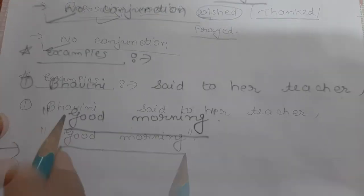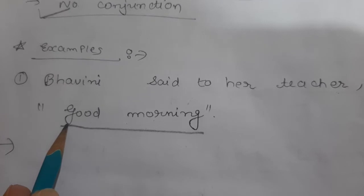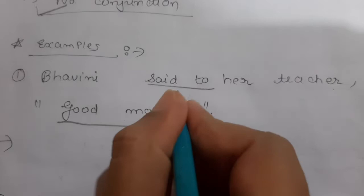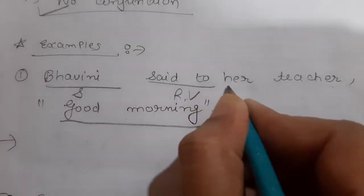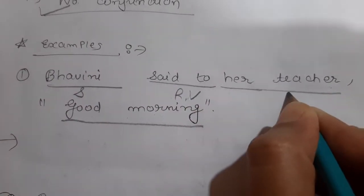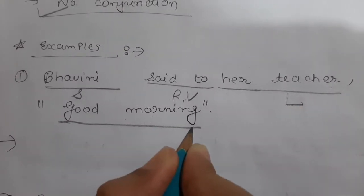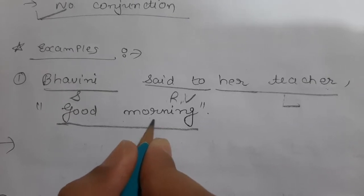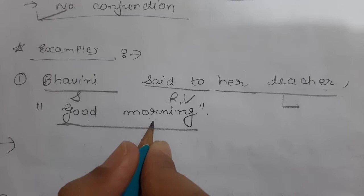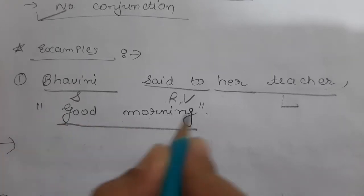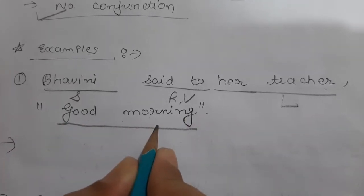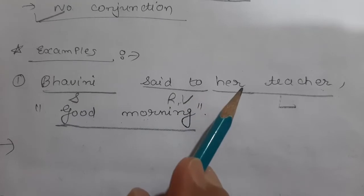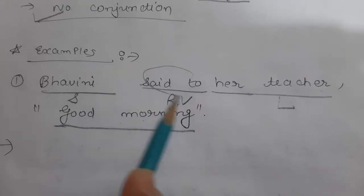Let us see the reporting verb and reported speech. Reporting verb is 'say to,' Bhavini is the speaker, her teacher is the listener, and the reported speech is very short — 'Good morning,' 'Good afternoon,' 'Good noon,' 'Sorry,' 'Excuse me,' 'Thank you.' Such kind of short words will be given in inverted commas as reported speech. Here, Bhavini is wishing her teacher, so the reporting verb will be 'wished.'